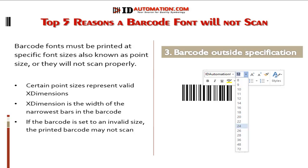The barcode is set to a font size outside of the specification. Barcode fonts must be printed at specific sizes, also known as point sizes, or they will not scan properly. Certain point sizes represent valid X dimensions. X dimension is the width of the narrowest bars in a barcode, which all other bars are built on. It is generally calculated in mils or centimeters. For example, a valid point size for Code 128 printed to a laser printer is 24 points. If the barcode is set to an invalid size such as 23 points, the printed barcode may not scan. Ensure that a valid point size is used.